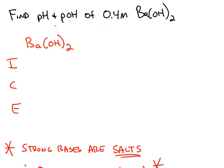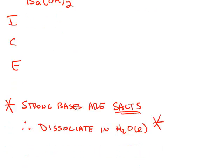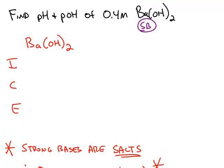Here's a similar problem. 25 degrees because no temperature is given. Find the pH and pOH of 0.4 molar barium hydroxide. Barium hydroxide is a group 2 cation barium paired up with hydroxide, which means we have a strong base. Strong bases are unique in that strong bases are all salts, and if you have a salt that dissolves in water, you know that ionic compounds dissociate when they're in water. So this is the only type of chemical where we set up the ICE chart just a little bit differently.